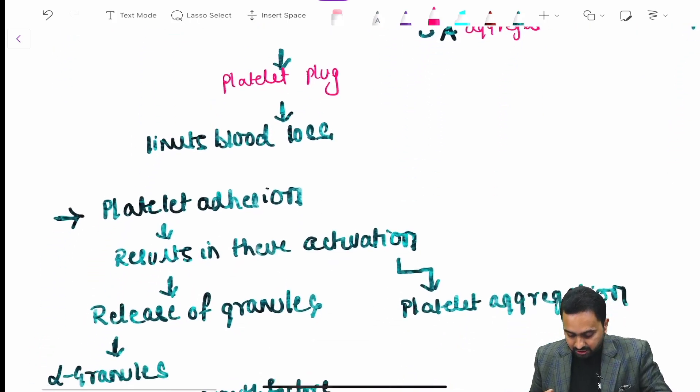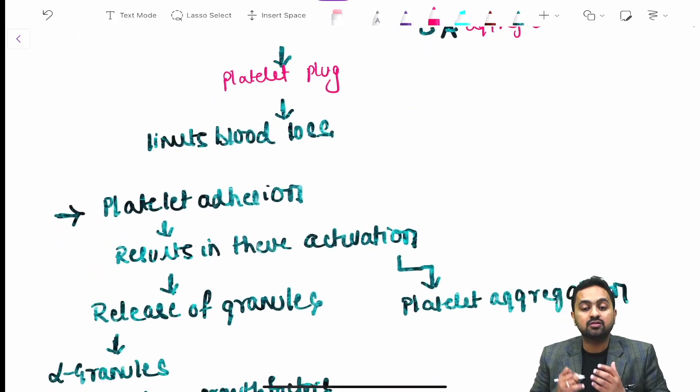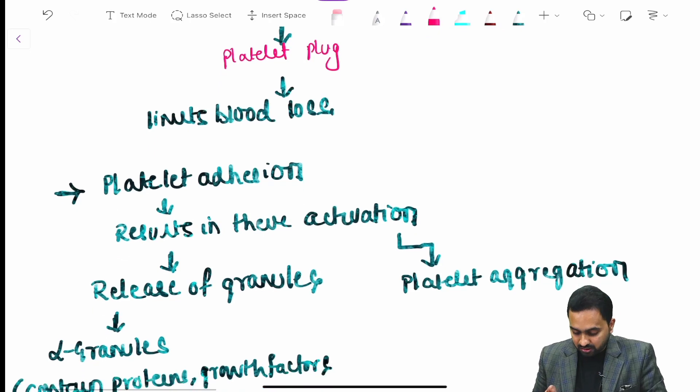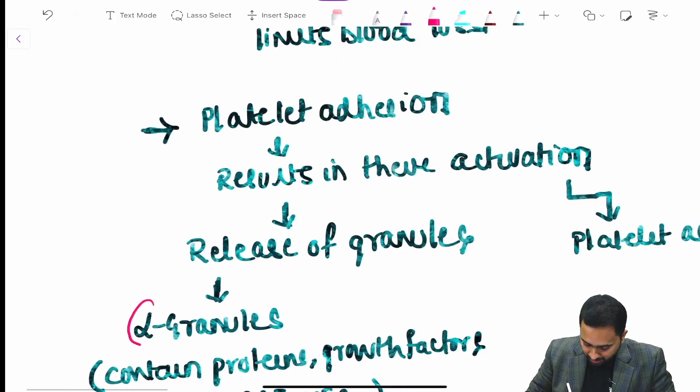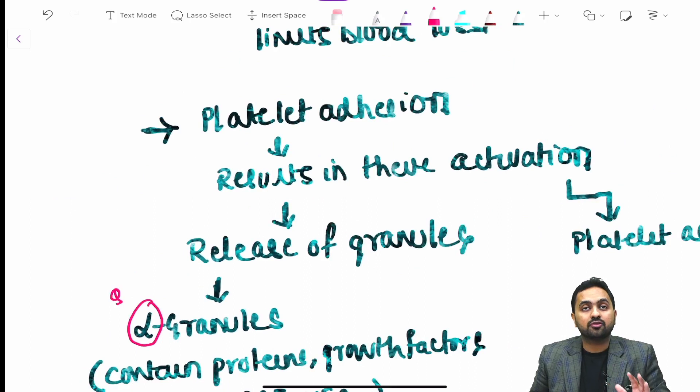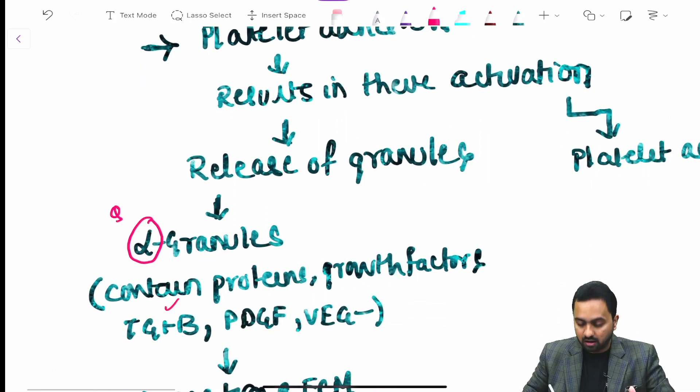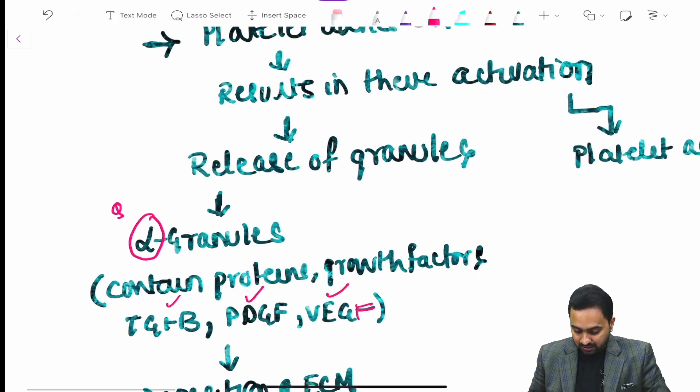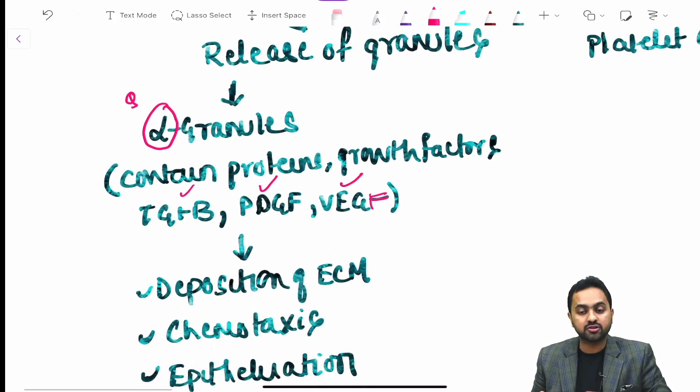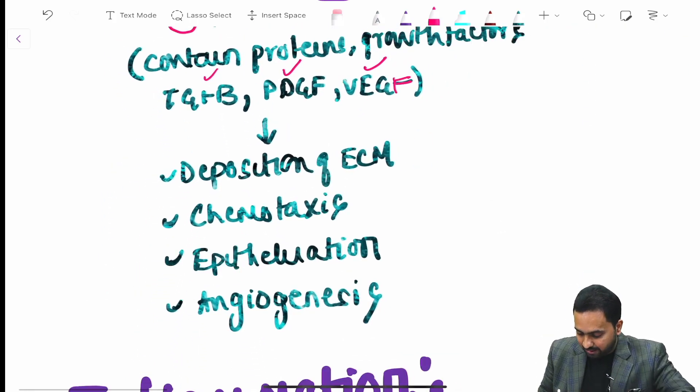This platelet adhesion also leads to their activation which causes the release of your alpha granules which consists of protein and various growth factors like your transforming growth factor beta, platelet derived growth factor and vascular endothelial growth factors. This causes deposition of extracellular matrix, chemotaxis, epithelialization and angiogenesis.